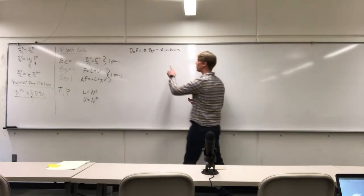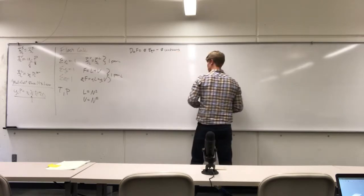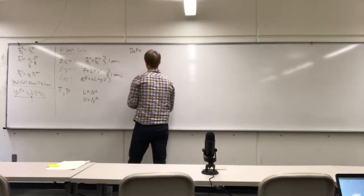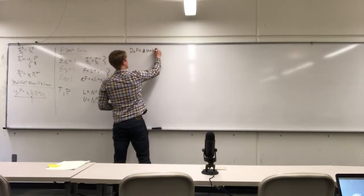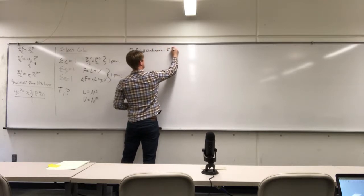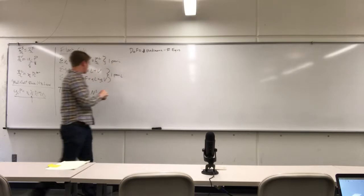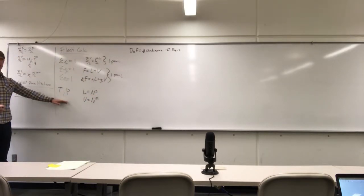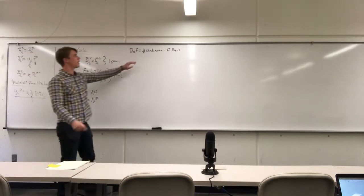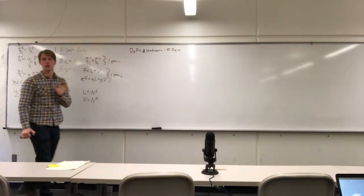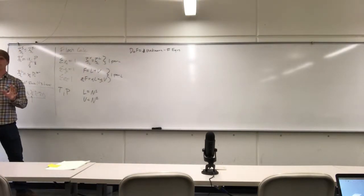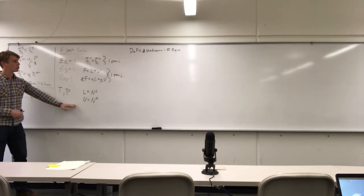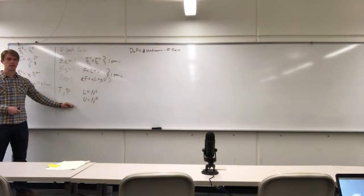Degrees of freedom equals number of unknowns minus number of equations. If I have more unknowns than equations, the system is possible but underdetermined. Depending on how complicated the system is, we add all of this up, giving us a total number of equations. We need to specify enough variables so the number of unknowns equals the number of equations — giving us zero degrees of freedom. For the most part, we're not going to want to solve the system with a giant, massive non-linear solver.